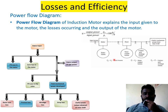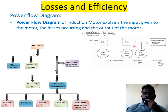Similarly, if P3 is the output of the rotor, P3 is equal to P2 input to the rotor minus rotor copper losses. There are also friction and windage losses. The useful mechanical output PM is the difference of P3 minus friction and windage losses.